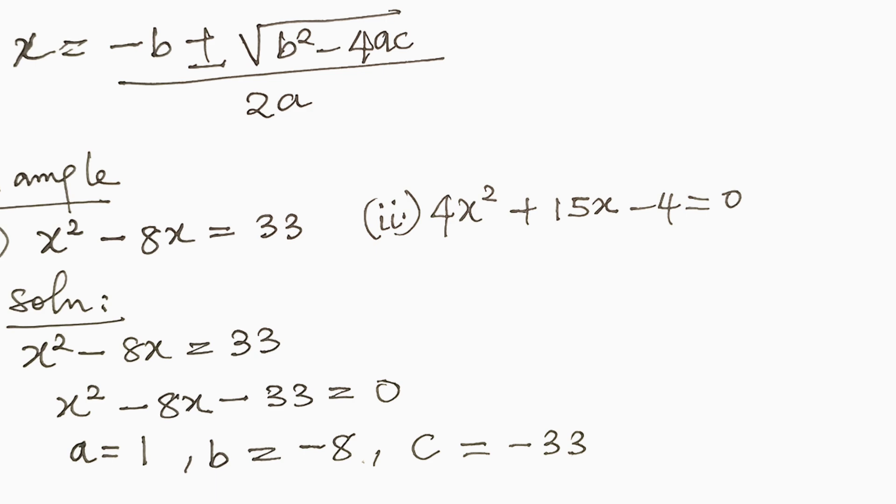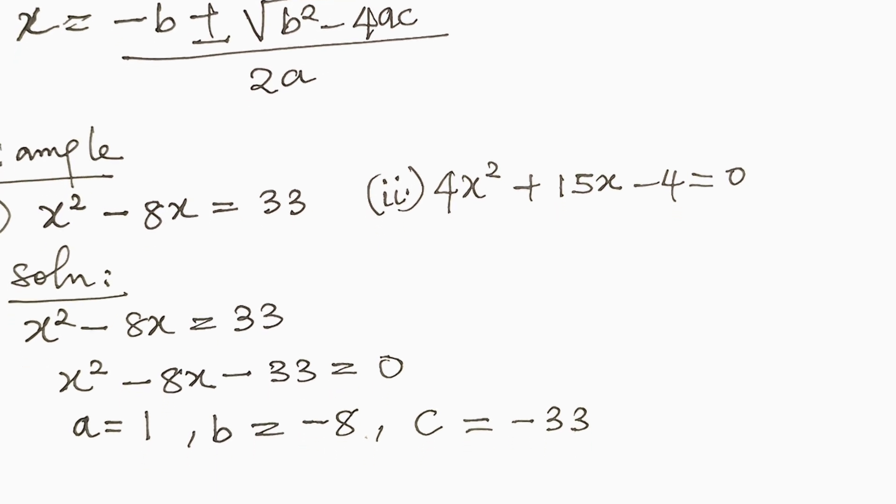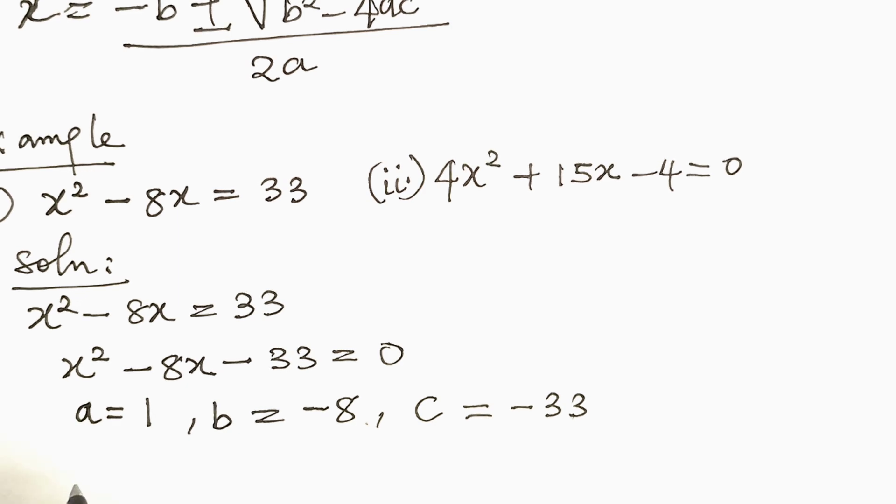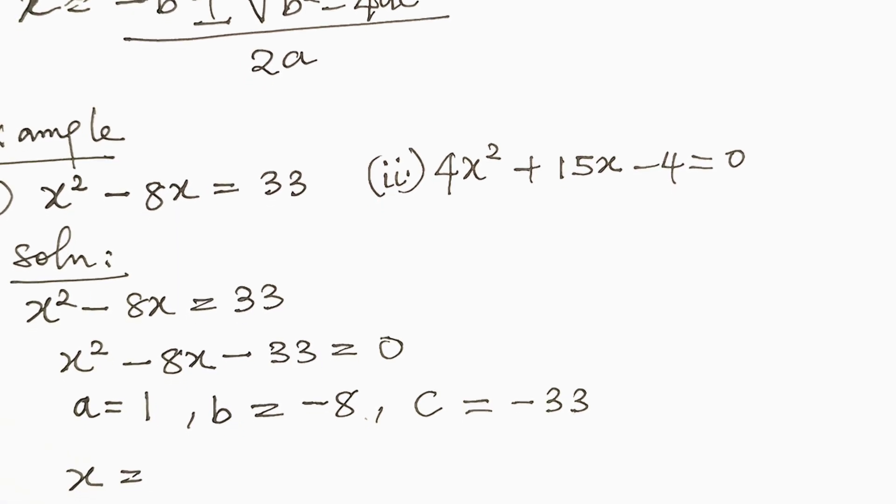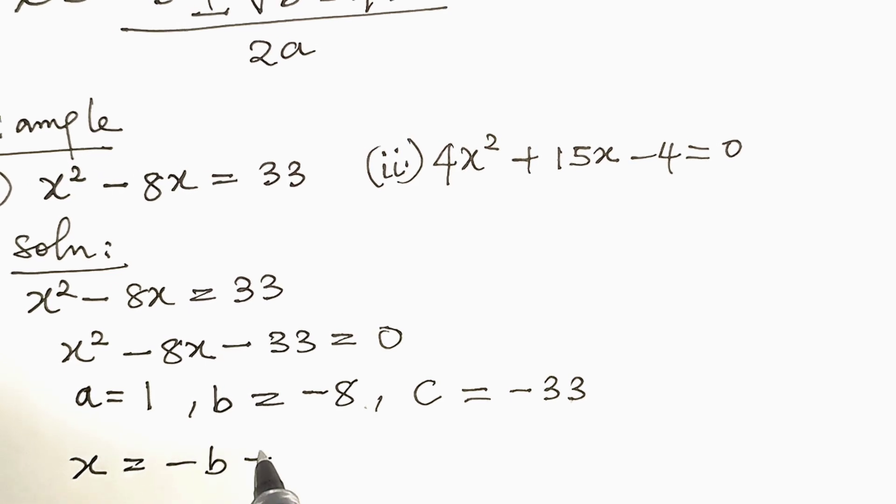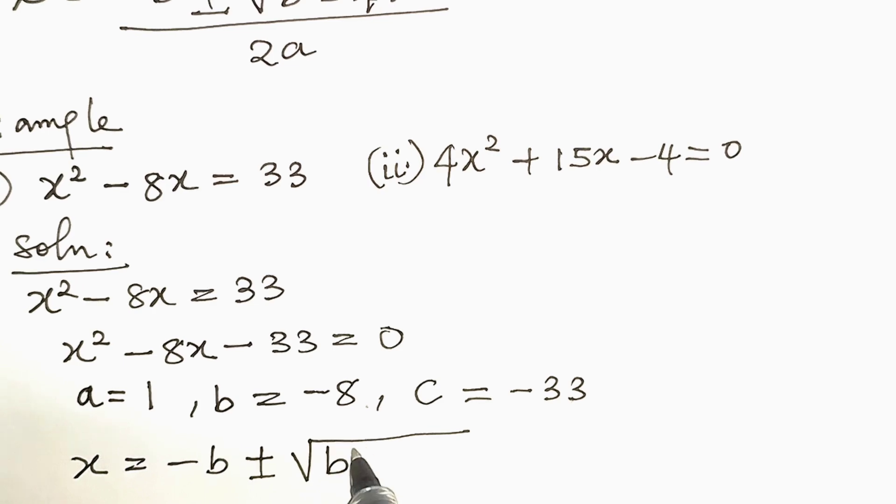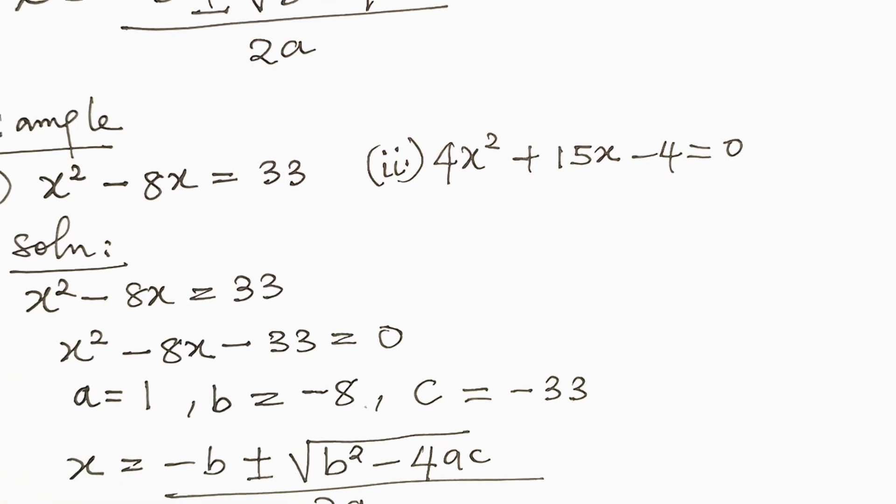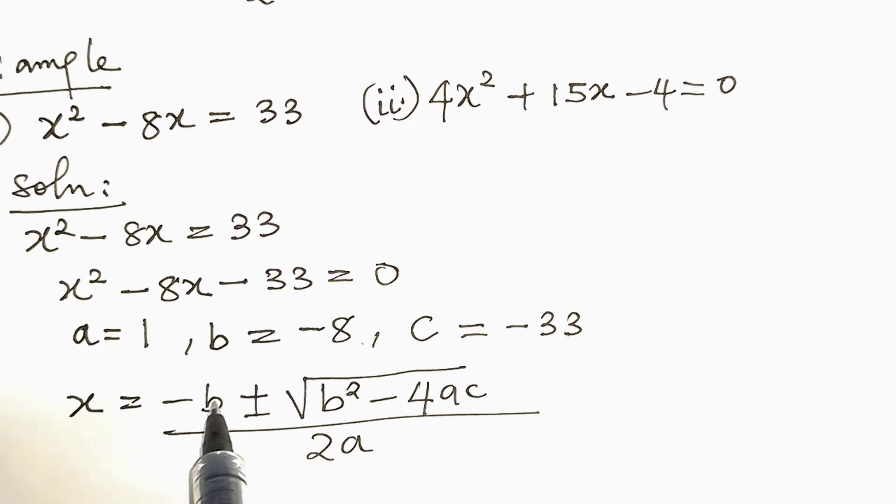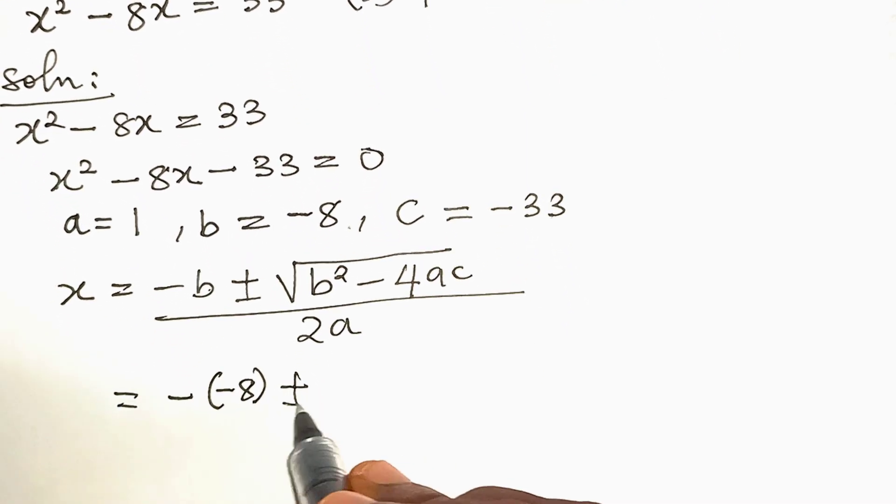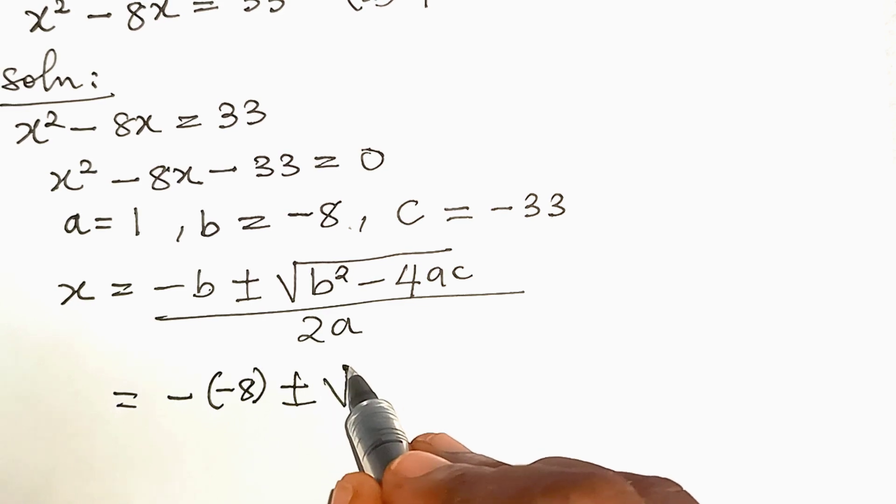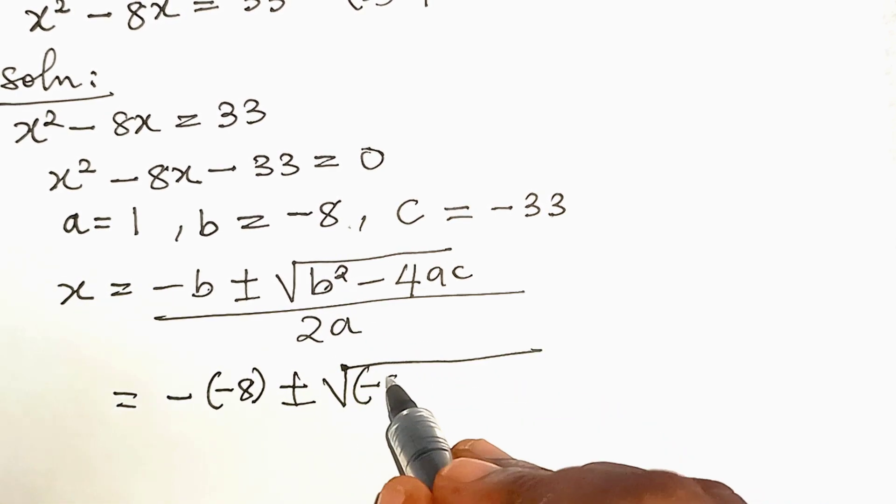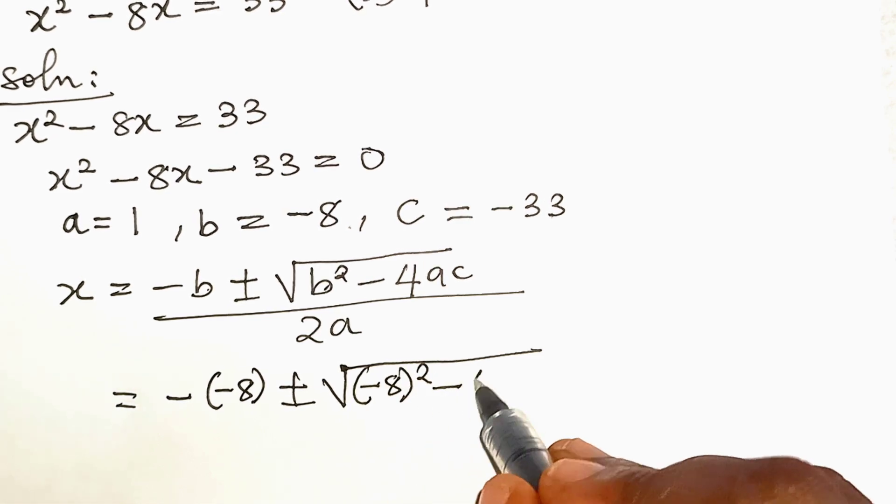So, now we have all the coefficients, we can now go ahead to use the quadratic formula. So, x is equal to minus b plus or minus square root of b squared minus 4ac all divided by 2a. So, this is equal to minus minus 8.